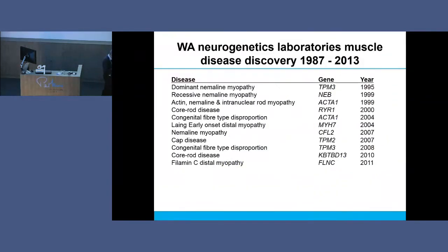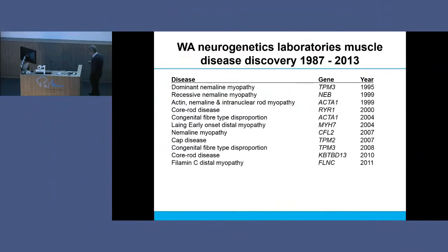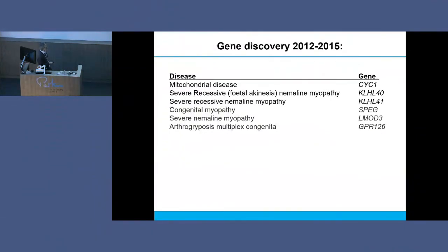Over the years we found a number of muscle disease genes - one of them, luckily, is named after me, which is kind of cool. It's quite useful for getting grant funding. Between 1987 and 2013 we found that many muscle disease genes, and in the last few years we've found a lot more. The pace of finding disease genes has increased rapidly.